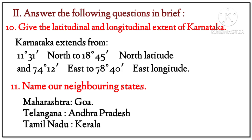Question number 2 — Answer the following questions in brief. Question 10: Give the latitudinal and longitudinal extent of Karnataka. Answer: Karnataka extends from 11 degrees 51 minutes north to 18 degrees 45 minutes north latitude, and 74 degrees 12 minutes east to 78 degrees 40 minutes east longitude.